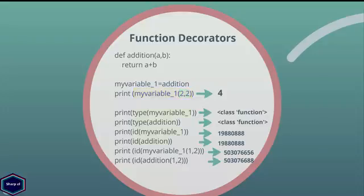Now if you print the type and id of both my_variable1 and the addition function, you can see both are of type function and they have the same id, until you call the functions addition or my_variable1 with different arguments.